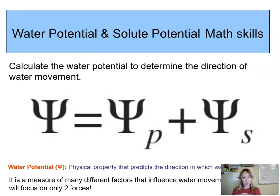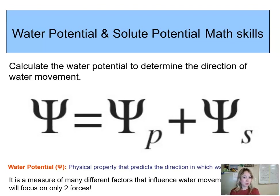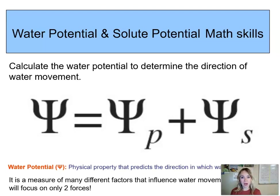Now we're going to calculate water potential. Up until this point we talked about water concentration — here's high concentration, here's low concentration, and water moves from high to low. This is going to be the same concept except we're going to use different terms. We're going to refer to water concentration as water potential — high water potential and low water potential — and water moves from high to low.